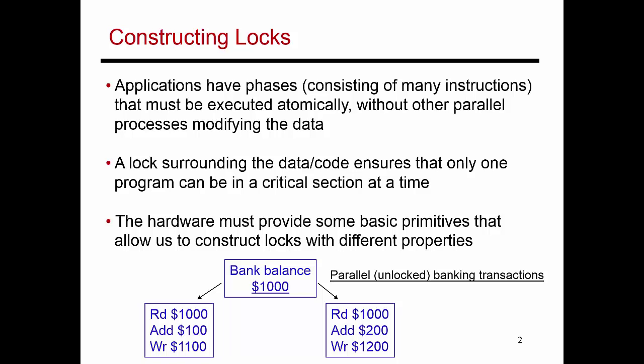Let me motivate that with this example. Let's say that you have a banking application, a multi-threaded application. The many threads all deal with the same variables. There is a couple with a shared bank account, and that bank account has a balance of $1,000. The husband and the wife are both at different ATMs, and they're both trying to deposit some money. This is a multi-threaded application because there's one thread running on the first ATM and a second thread running on the second ATM, and both threads are going to be accessing the shared variable — this couple's bank balance.